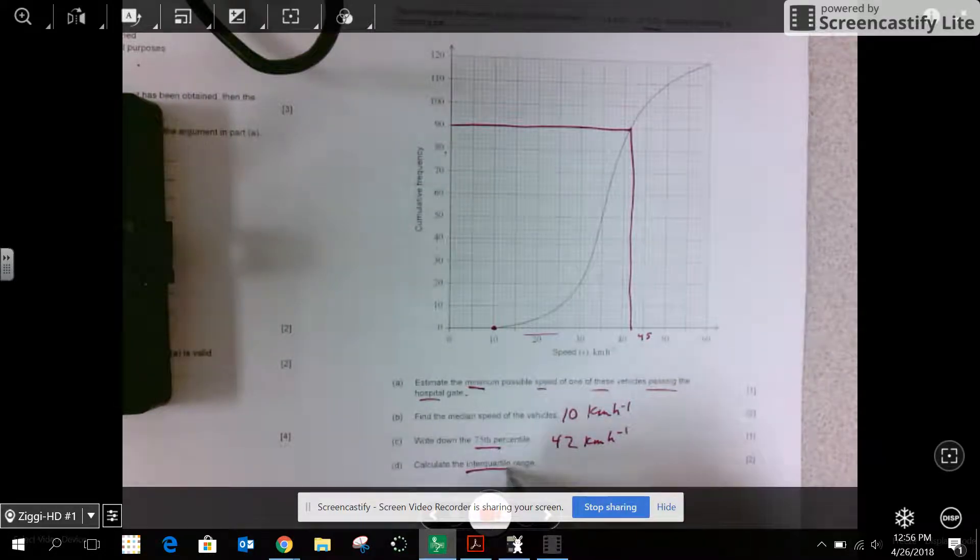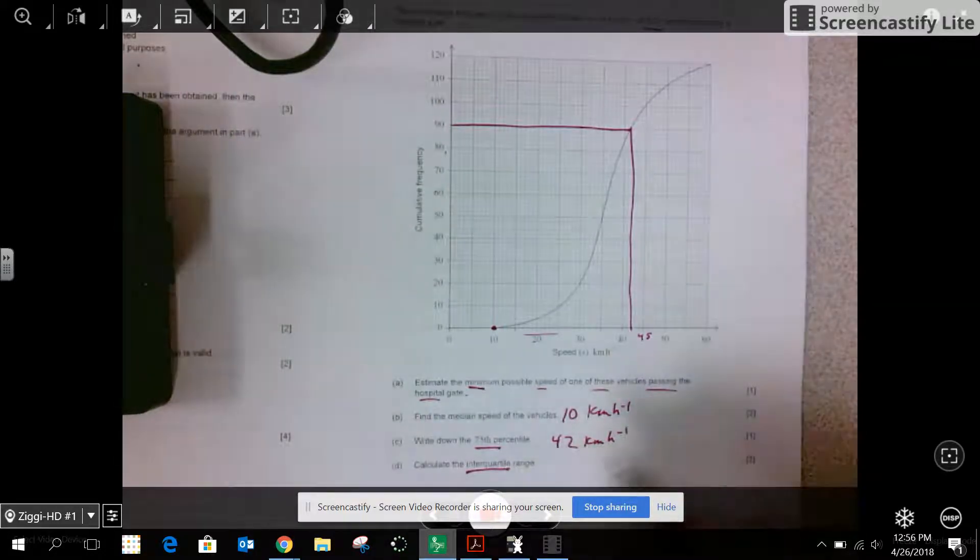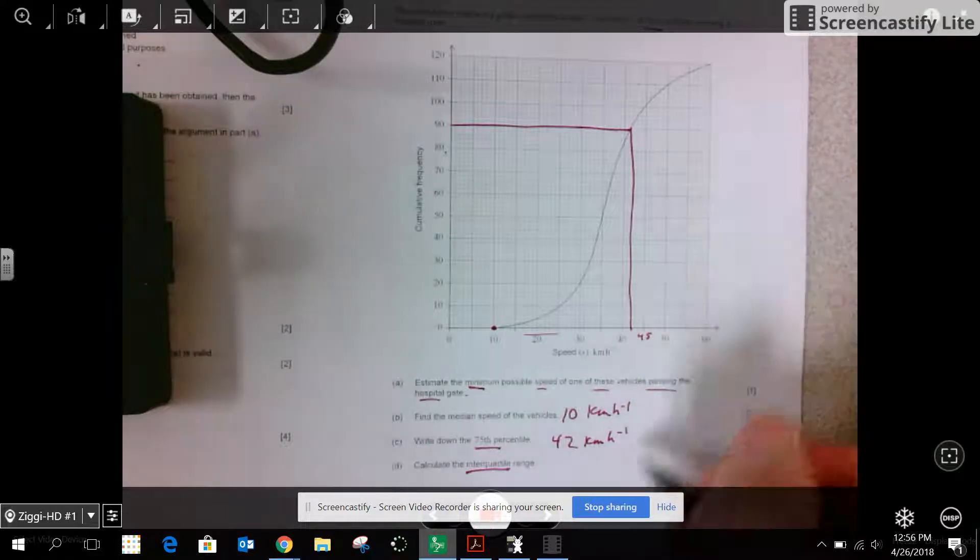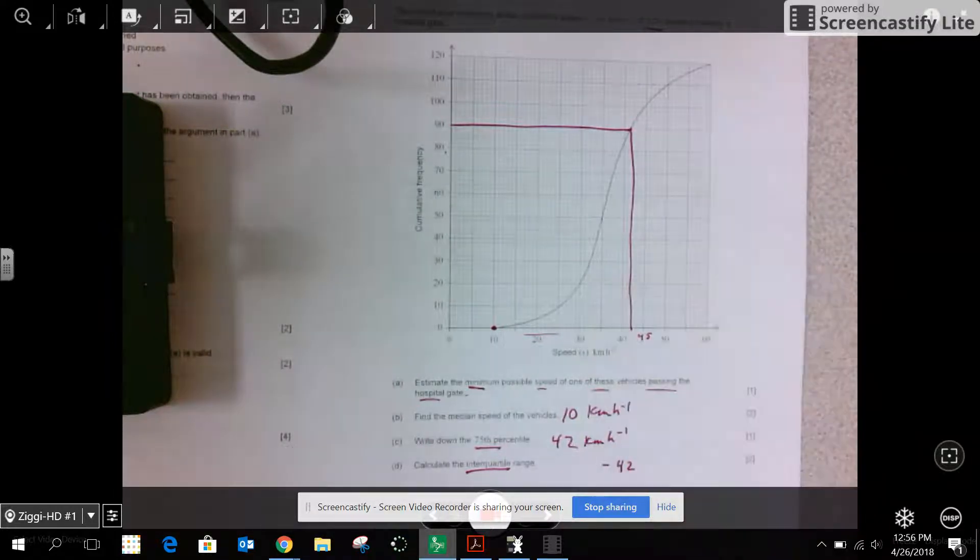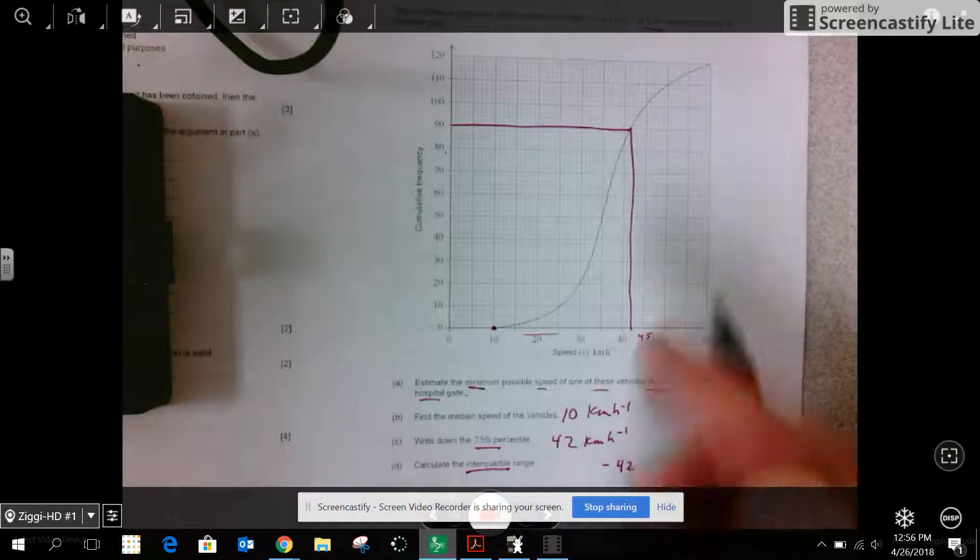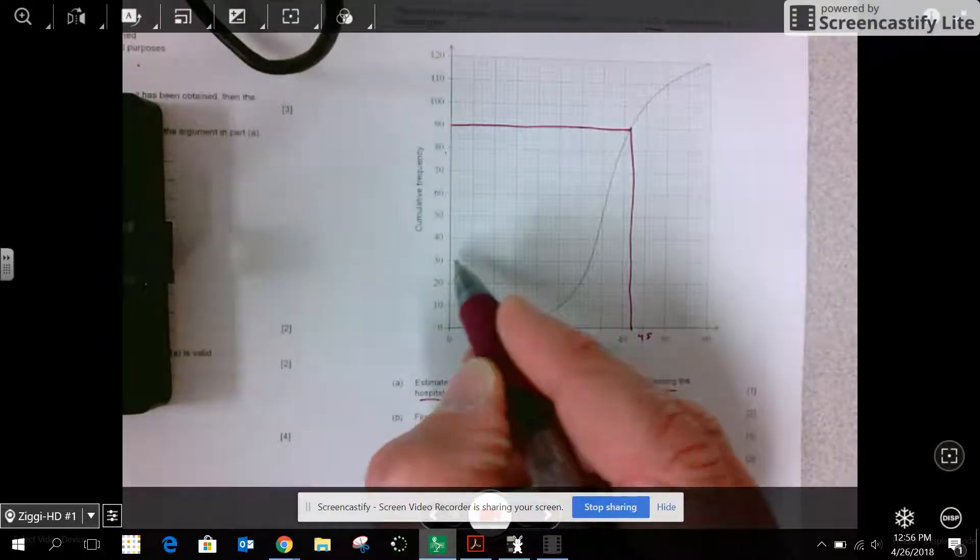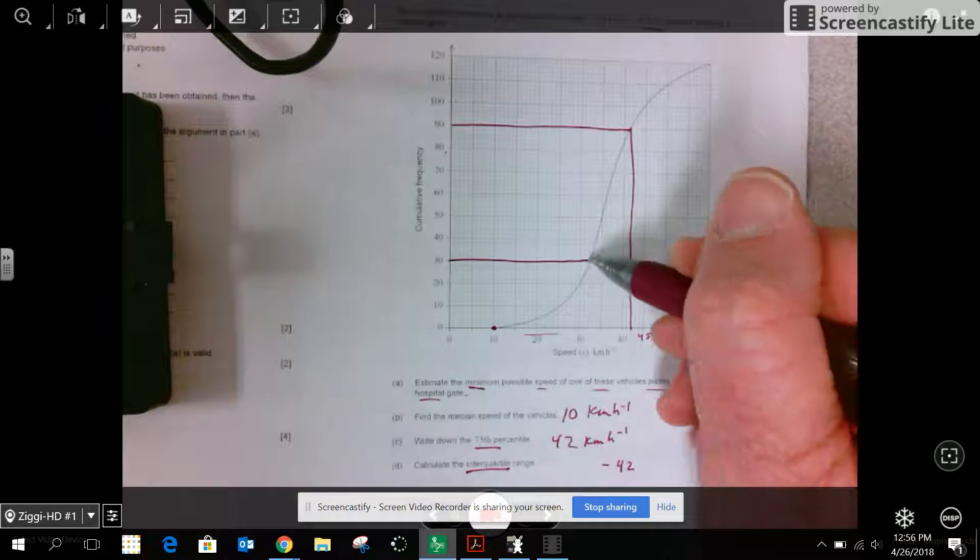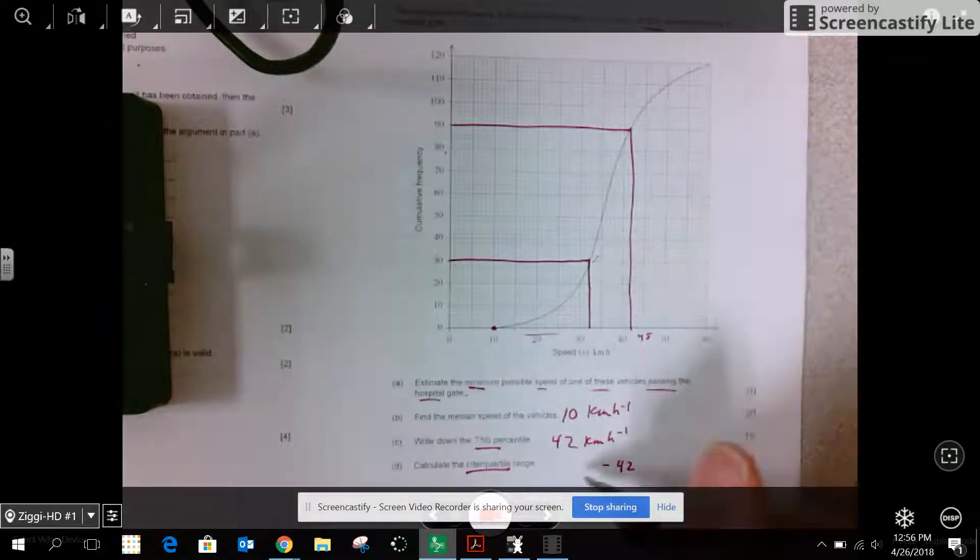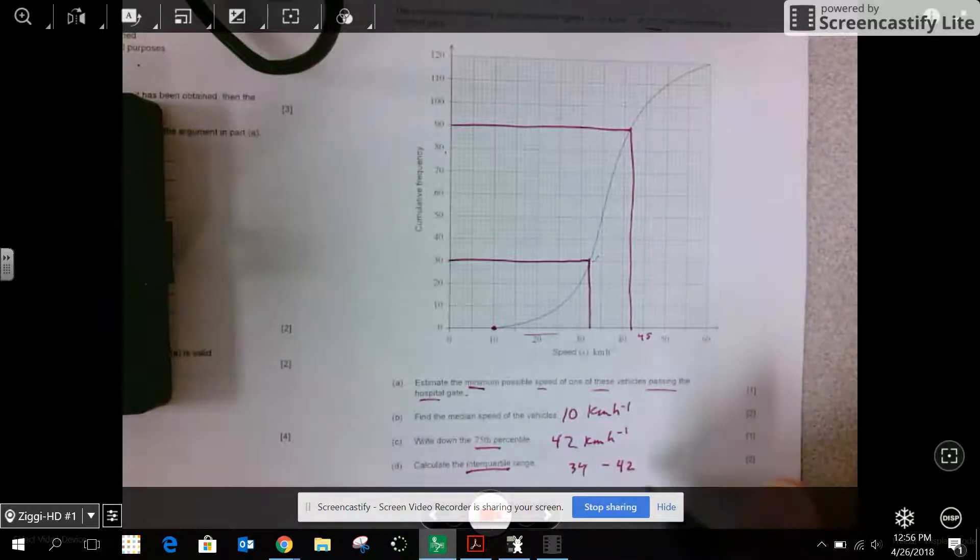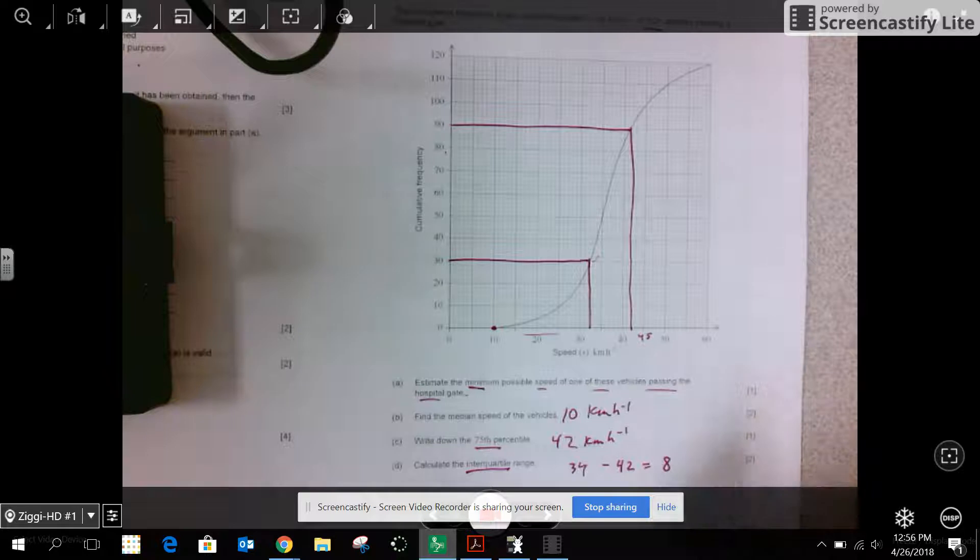Calculate the interquartile range. So I have the upper quartile as 42. I just found it. The lower quartile is 25%. So 25% of 120 is 30. Over and down again using a straight edge. So from 34 to 42, that's the interquartile range of 8.